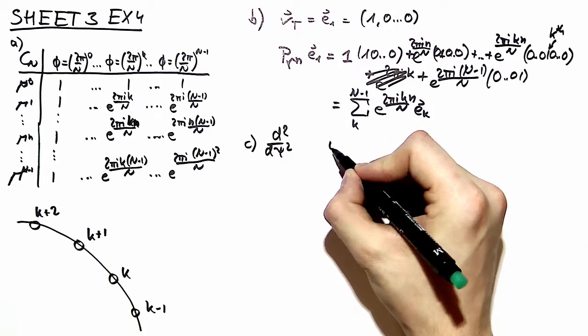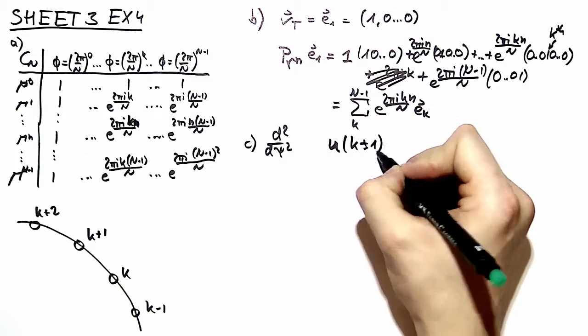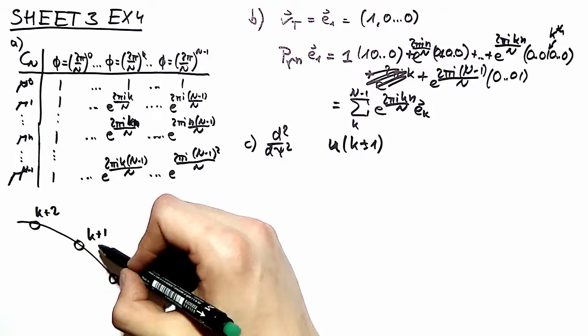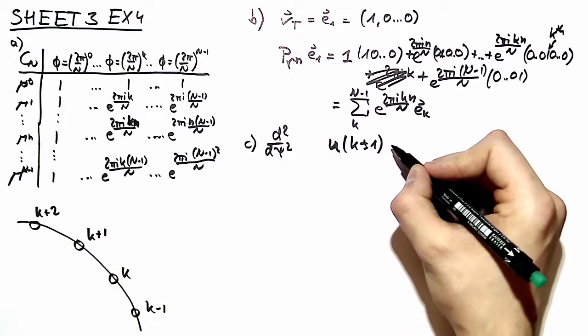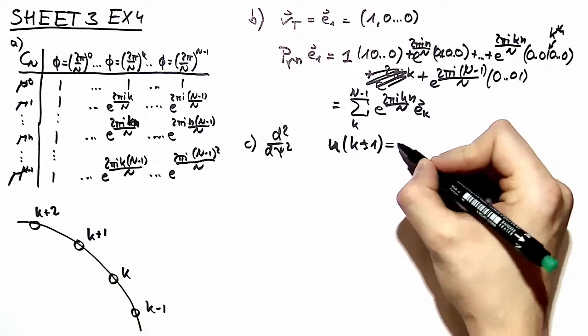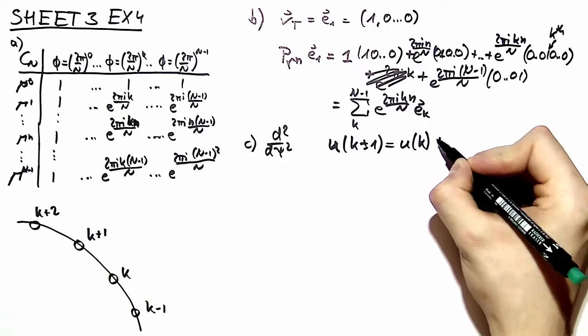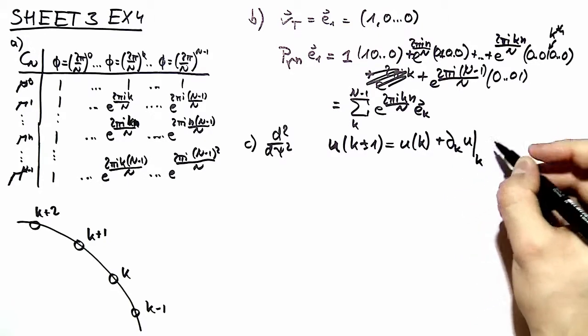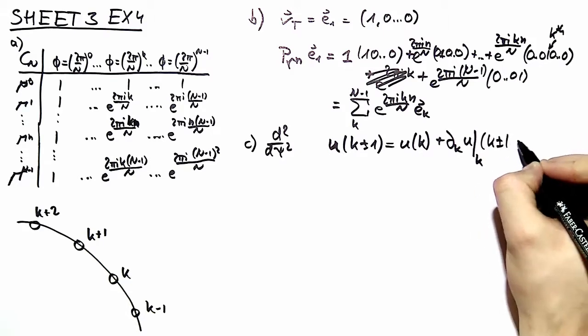We can evaluate our function u at a position k plus or minus 1. So we're at k and we look at the Taylor expansion what happens if we move from k to k plus 1. And we expand that we end up with u of k plus the derivative according to k of u at position k plus k plus minus 1 minus k.